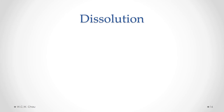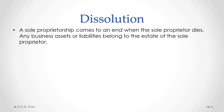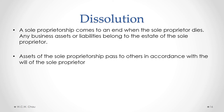Since a sole proprietorship is not a separate legal entity, when the sole proprietor dies, the sole proprietorship comes to an end — it cannot go beyond the death of the one owner. Any business assets or liabilities that exist at the time of death get automatically passed on to the estate of the sole proprietor. The estate will take care of paying those liabilities, and if any assets remain after the debts are paid, those assets will be transferred to the people named in the will of the sole proprietor.